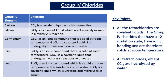Lead 4 chloride, PbCl4, is the other chloride of lead. It's a covalent liquid which is unstable and readily decomposes on heating to form PbCl2 and chlorine. PbCl4 is made up of simple molecules with weak van der Waal forces between the molecules, so it has a low melting point. PbCl4 also undergoes hydrolysis reactions with water.